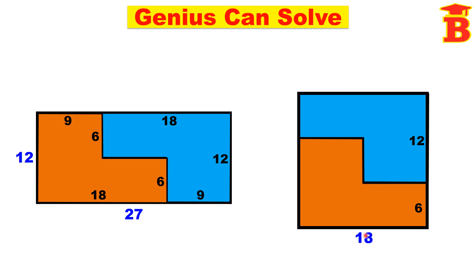And here this side is 18. Other side 6 plus 12 is 18. So this is a square with side 18 units. Thanks for watching.